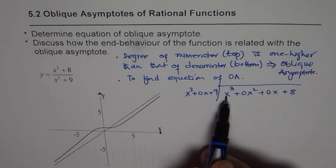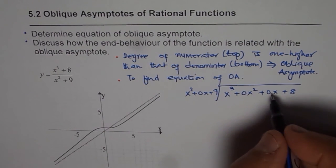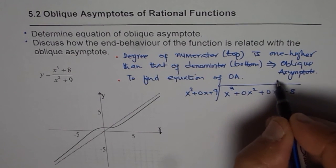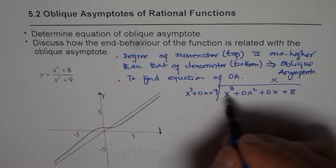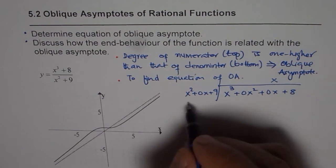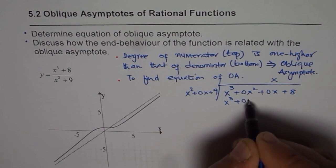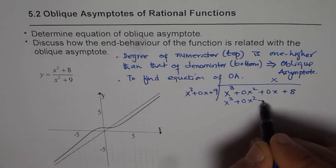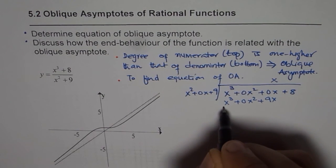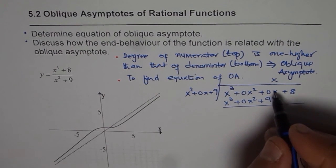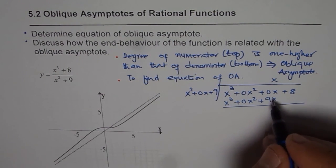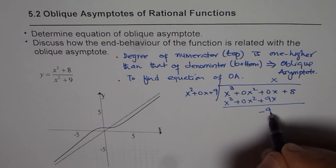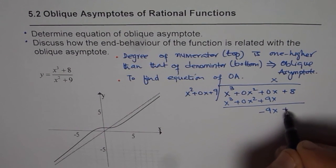So x squared and x cubed, we have to take three terms. We have to multiply by x. So let me write x here. So we get x cubed plus 0x squared plus 9x. When we take away, we will get, this is 0, and here we get minus 9x plus 8.